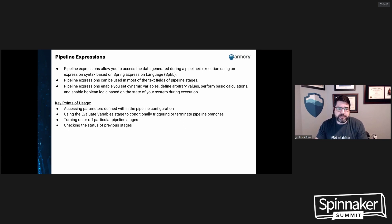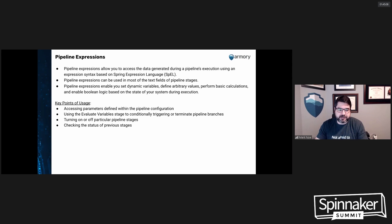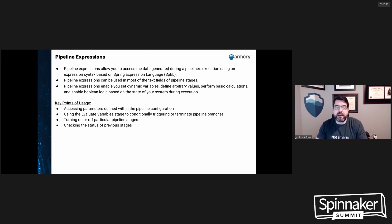The power of pipeline expressions is that you can evaluate data as the pipeline executes to set dynamic variables, find arbitrary values, perform basic calculations, and even leverage Boolean logic in your pipeline based on its own state. Key use cases include accessing parameters defined within the pipeline, using the evaluate variable stage to conditionally trigger or terminate pipeline branches, turning on or off particular pipeline stages, and checking the status of a previous stage.